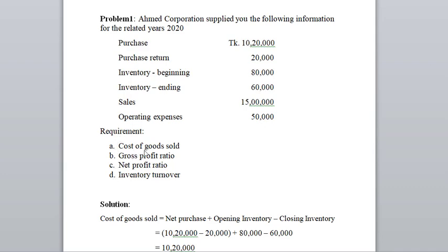The requirements are: A — cost of goods sold; B — gross profit ratio; C — net profit ratio; D — inventory turnover.